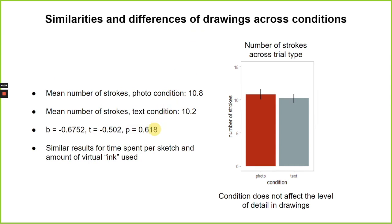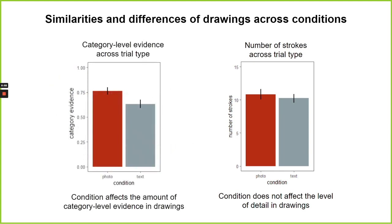Another possible difference between the sketches is that people make more detailed drawings when drawing instances than when drawing categories. In other words, the greater recognizability of object instances might be explained by greater detail put into those drawings — if so, participants would use more strokes to produce sketches of object instances than of object categories. Surprisingly, we did not find this to be the case; the number of strokes was roughly equal between the two conditions. These results show us that there is a difference in the semantic content of sketches that is not explained by differences in detail between the conditions.